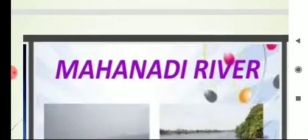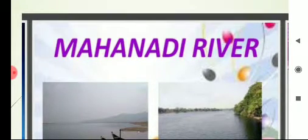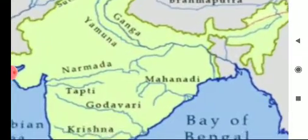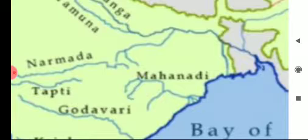Let us discuss about another important river — Mahanadi. River Mahanadi flows in the parts of Chhattisgarh and Odisha. It originates in the Shishwa mountains in Chhattisgarh, then enters Odisha, and falls into the Bay of Bengal. Remember that the Hirakud dam is constructed on river Mahanadi near Sambalpur in Odisha.